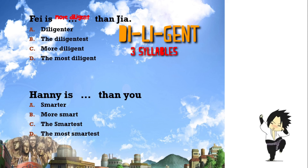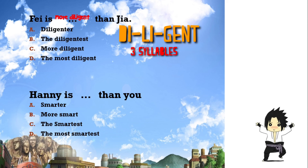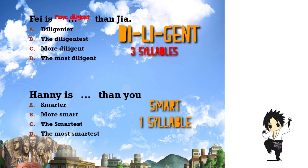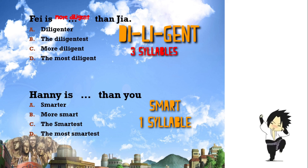Number ten: 'Honey is ___ than you.' We are comparing two people — Honey and you. The basic adjective is 'smart,' which has one syllable, so we add -er. The answer is 'smarter.' That's all for today, kiddos — I hope you understand what we talked about. Cheerio!